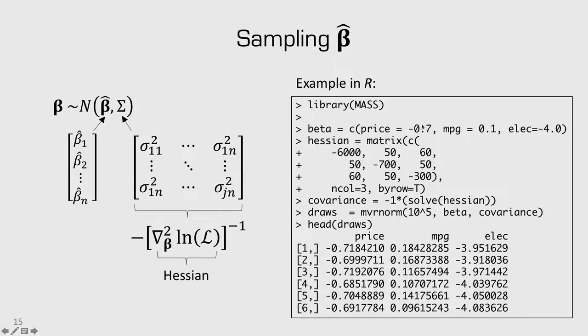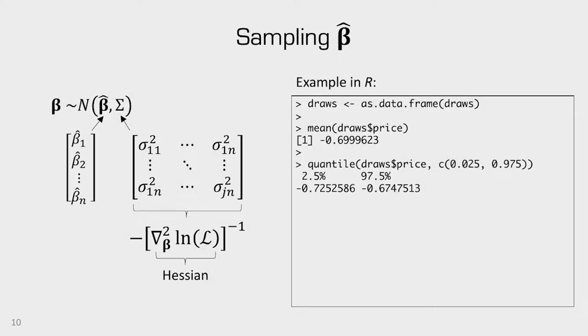right? So, for price, my mean estimate is -0.7. And you can see that the draws for price are all just around that value. And the same is true for MPG and ELEC.